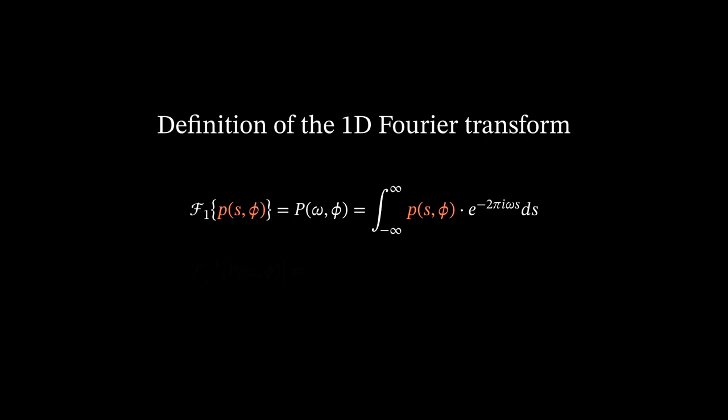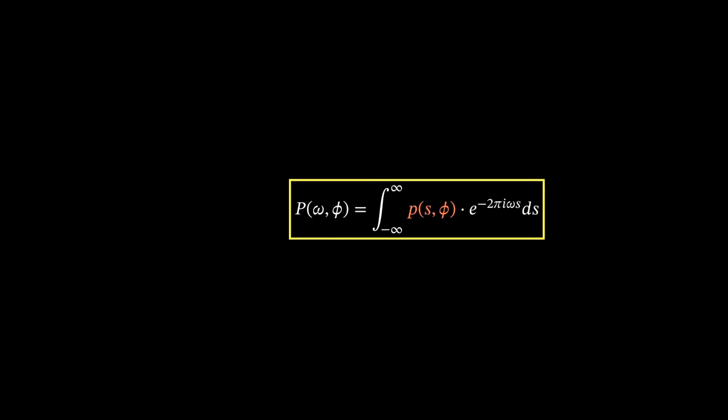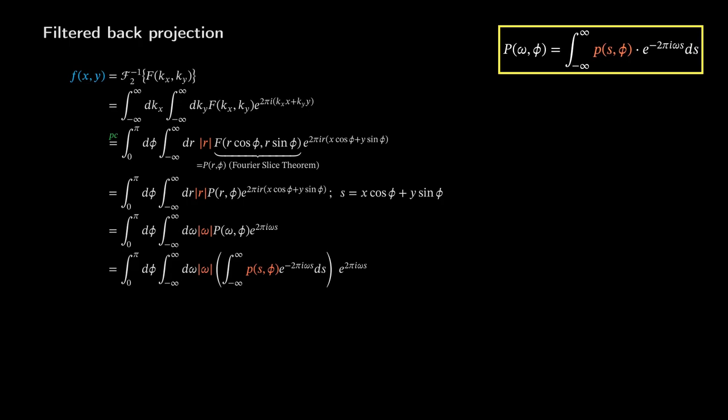The definition of the inverse transform is also shown. Plugging in the expression for the Fourier transformed detector function, we get now our final formula to calculate the original image f in the object space x and y from our projections. This more compact form can be understood as the following instruction. Make the Fourier transform of the detector function, multiply it by modulus omega, calculate the inverse Fourier transform of it, and finally integrate over all angles.